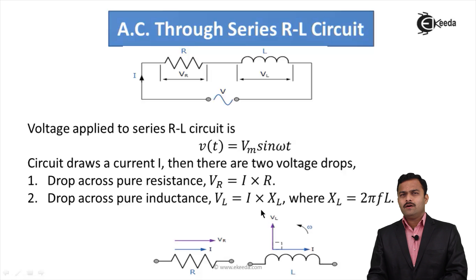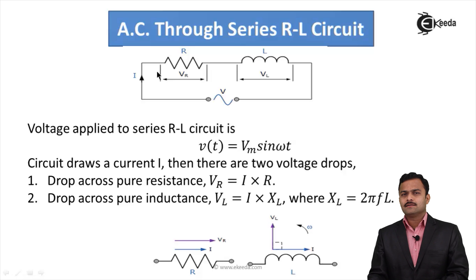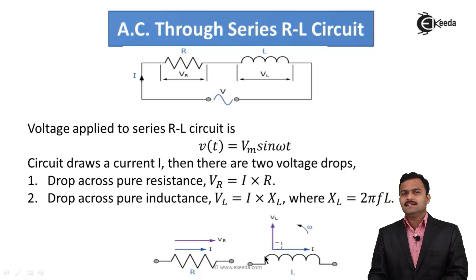From earlier, we know that in a phase diagram, for pure resistance, current and voltage are in phase — the phase angle between them is zero. For pure inductance under AC voltage, if we consider the current passing through it, voltage leads current by 90 degrees. So we get a phase diagram where VL is 90 degrees ahead of the current.